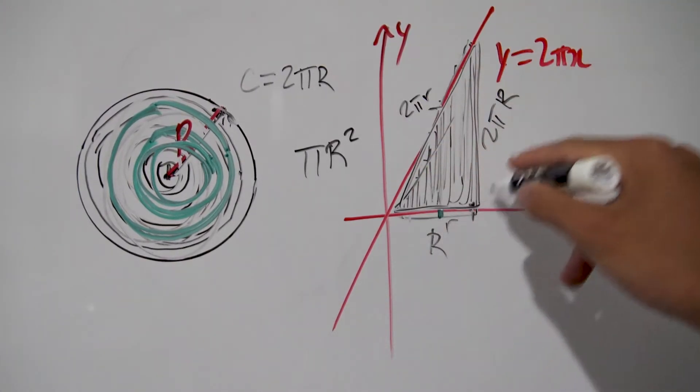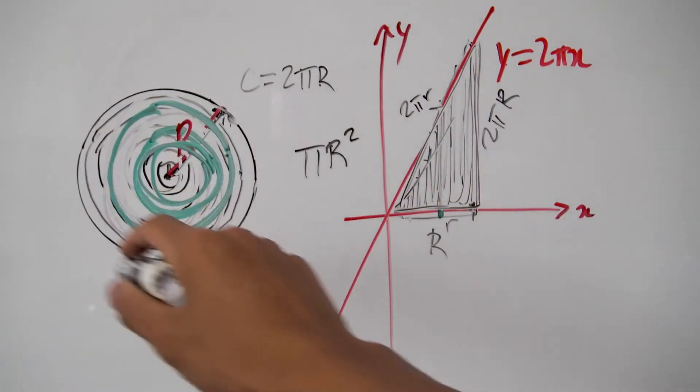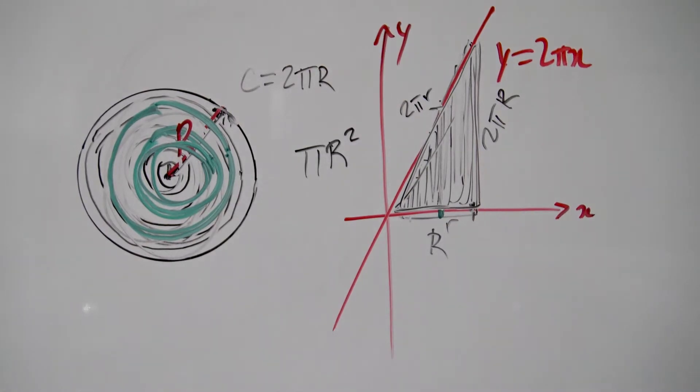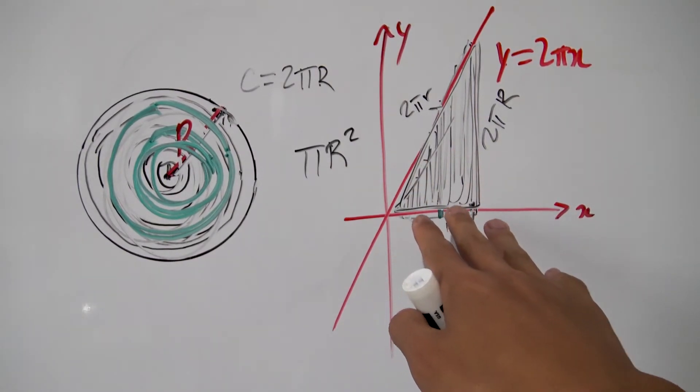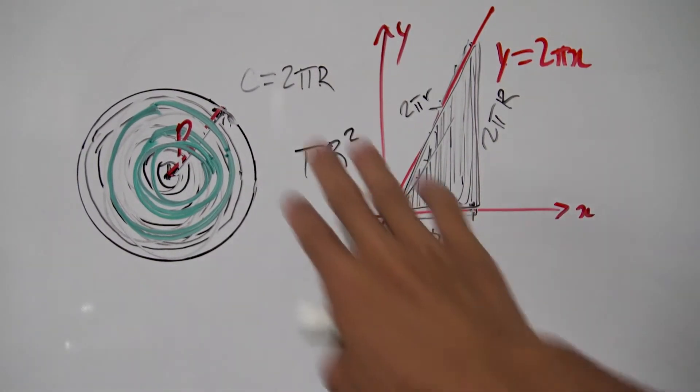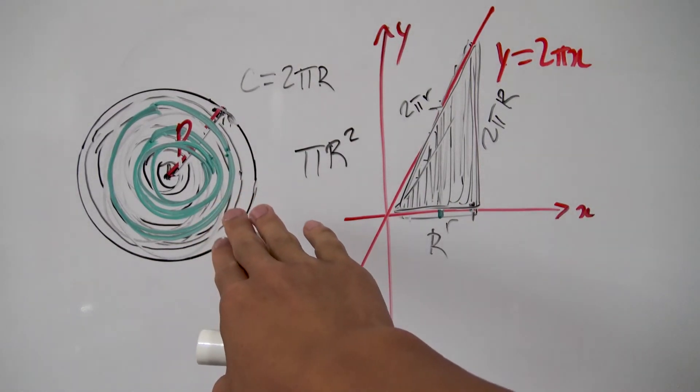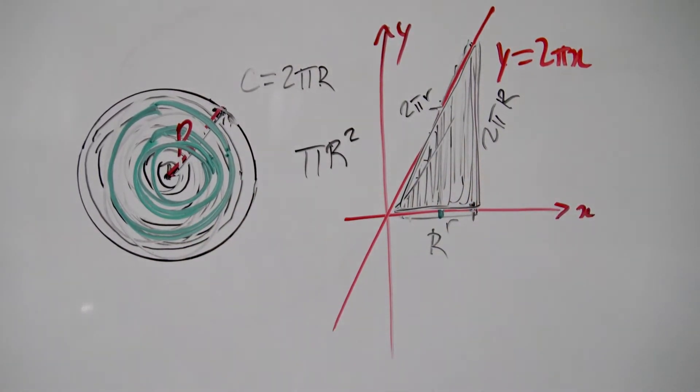And remember the area of this triangle came from the area of this circle. Basically all we did was we took many many rings inside our circle and we unfolded each of those rings and we laid it out onto a graph. And in doing so we reframed the question of finding the area of a circle into finding the area of a triangle which we know how to do quite easily.